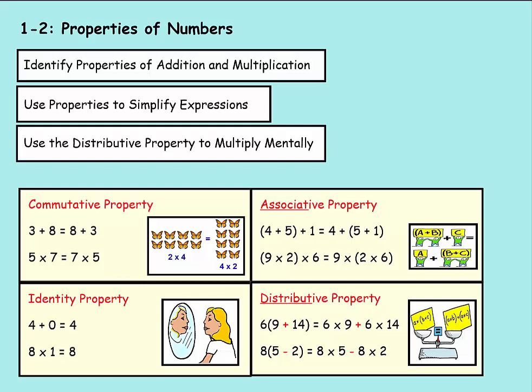The first property for us to learn is the commutative property. What the commutative property tells us is that if you're adding or multiplying, you can add in any order or you can multiply in any order. You can see that 3 plus 8 gives you the same answer as 8 plus 3. Or 5 times 7 gives you the same answer as 7 times 5. And these butterflies over here kind of show that. You could have two rows of four butterflies. 2 times 4 gives you 8. Or you could have four rows of two butterflies. 4 times 2, which also gives you 8 butterflies.